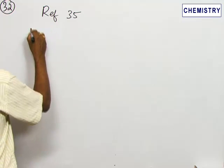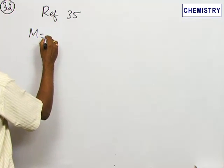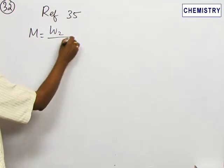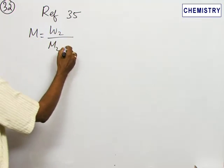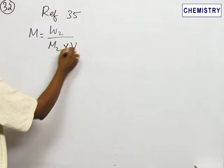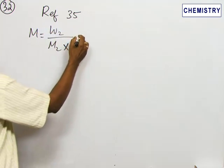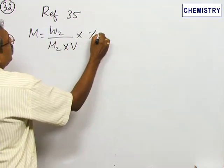Here M is equal to W2 divided by M2, so W2 by M2 will be the number of moles and volume. This portion will give what is called the molar concentration, so into percentage purity we have to take.